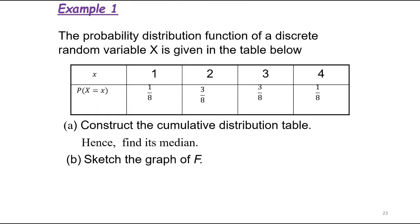Example 1: The probability distribution of discrete random variable X is given in the table below. X takes values 1, 2, 3, 4 with P(X = x) equal to 1/8, 3/8, 3/8, and 1/8 respectively. Construct the cumulative distribution table, find the median, and discuss a graph of F.